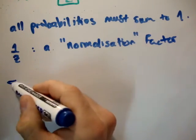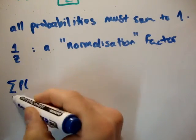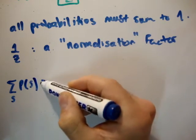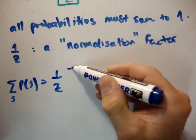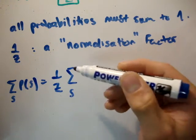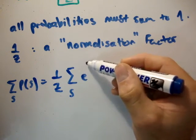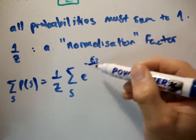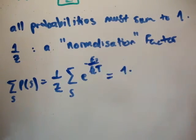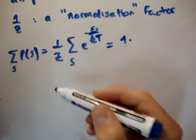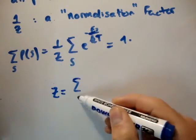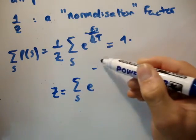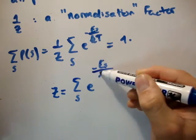Let's take the sum of the probabilities. It's going to be equal to 1 over z times the sum over s of e to the minus e sub s over kt, and we know that that must sum to 1. Or, rearranging it, we know that z is equal to the sum over s e to the minus e sub s over kt.